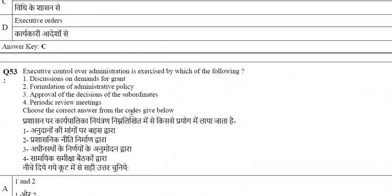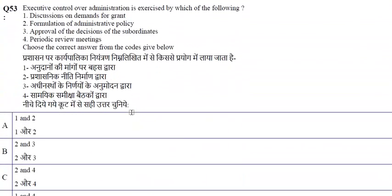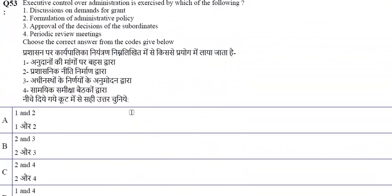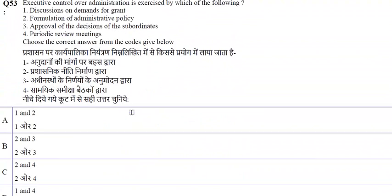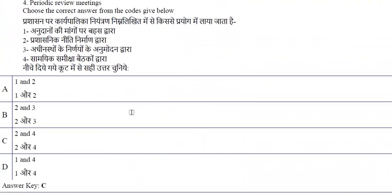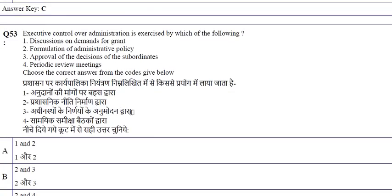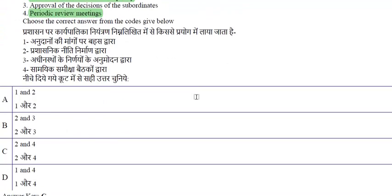Executive control over administration is exercised by formulation of administrative policy and periodic review meetings — option C, 2 and 4, is the right answer.